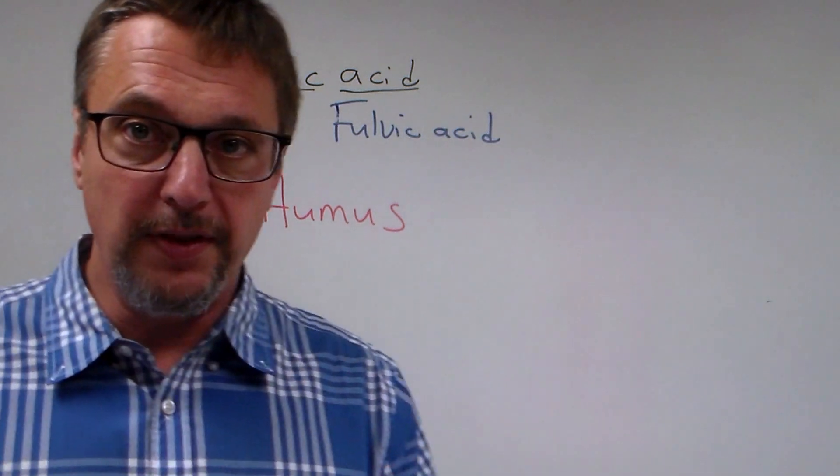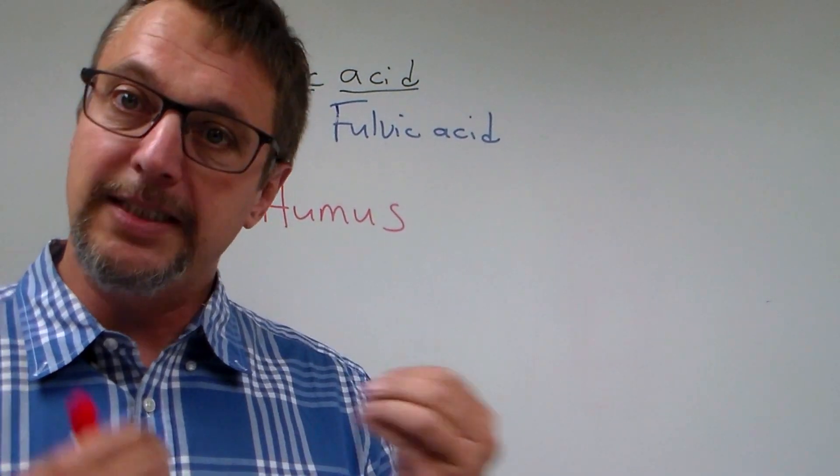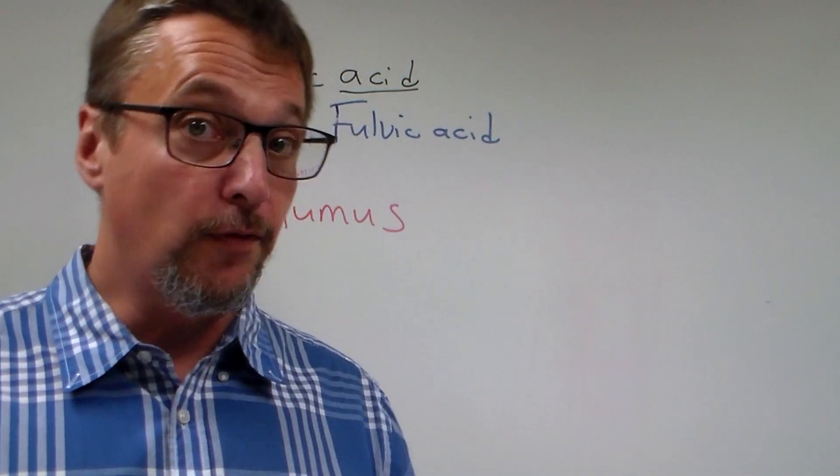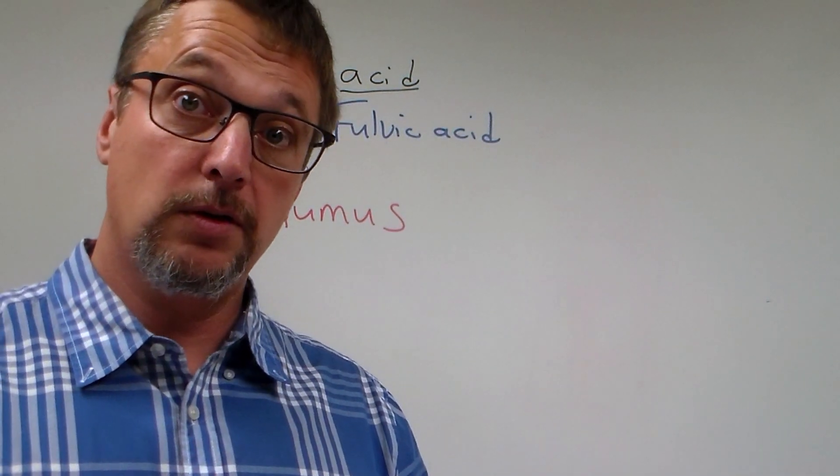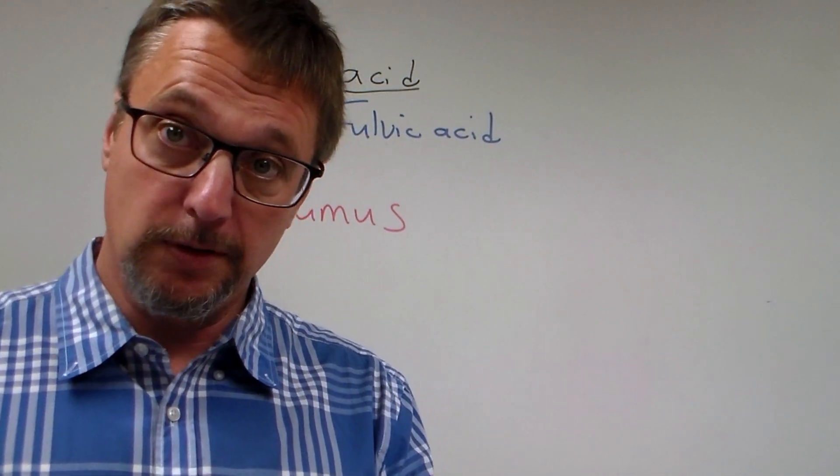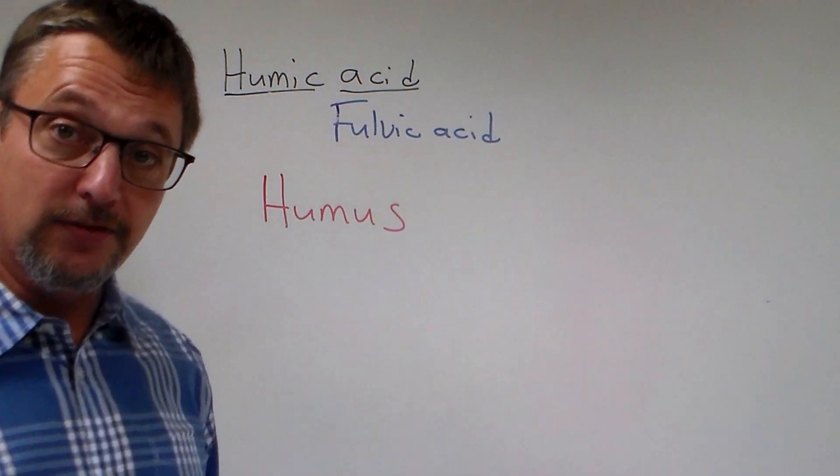So again, humus is not one thing, it's a very general term for these polymers that form during the decomposition in different ecosystems. So the humus is going to be different based on whether it formed in an ocean, or whether it formed in lakes or wetlands, or whether it formed in a terrestrial ecosystem. And so we're going to have different types of humus, which means we're going to have different humic acids and fulvic acids.